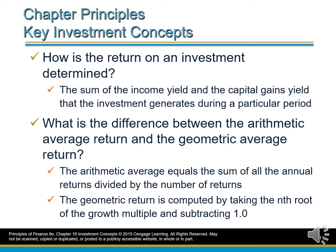What is the difference between arithmetic average return and geometric average return? The arithmetic average equals the sum of all the annual returns divided by the number of returns. The geometric return is computed by taking the nth root of the gross multiple and subtracting 1.